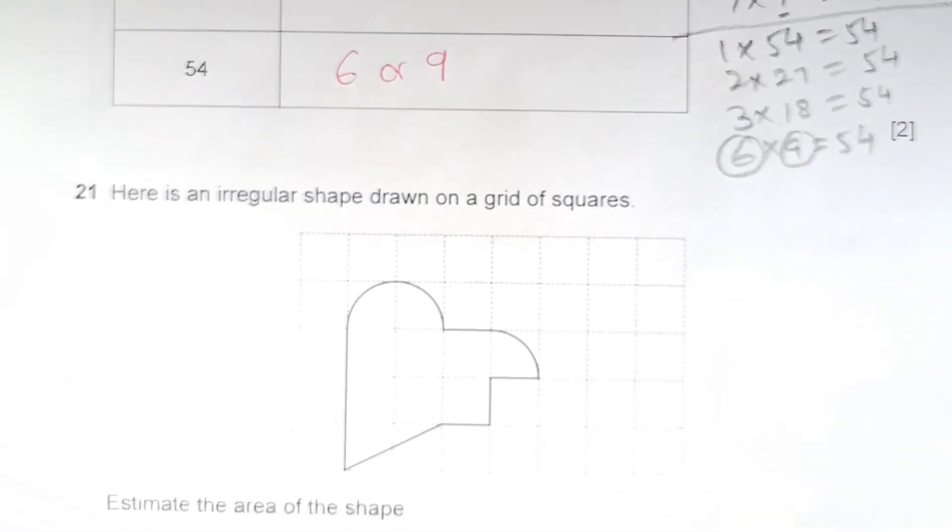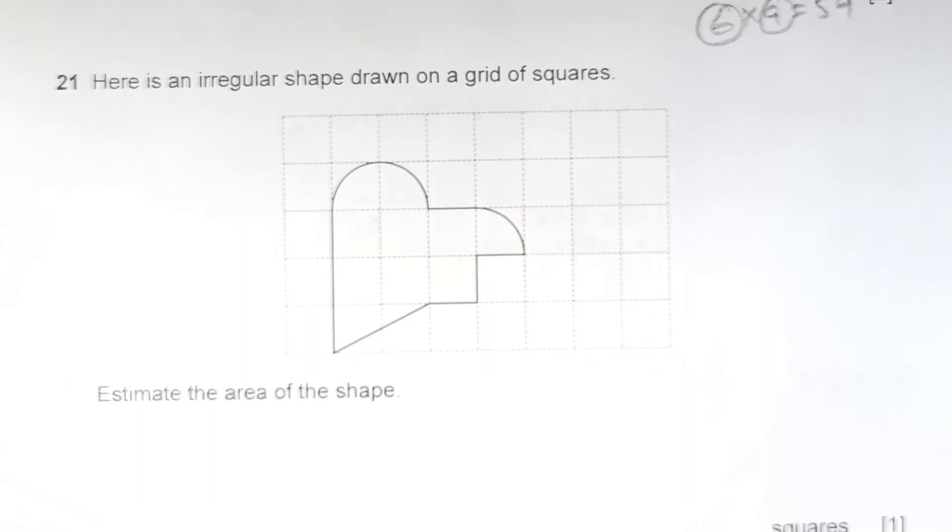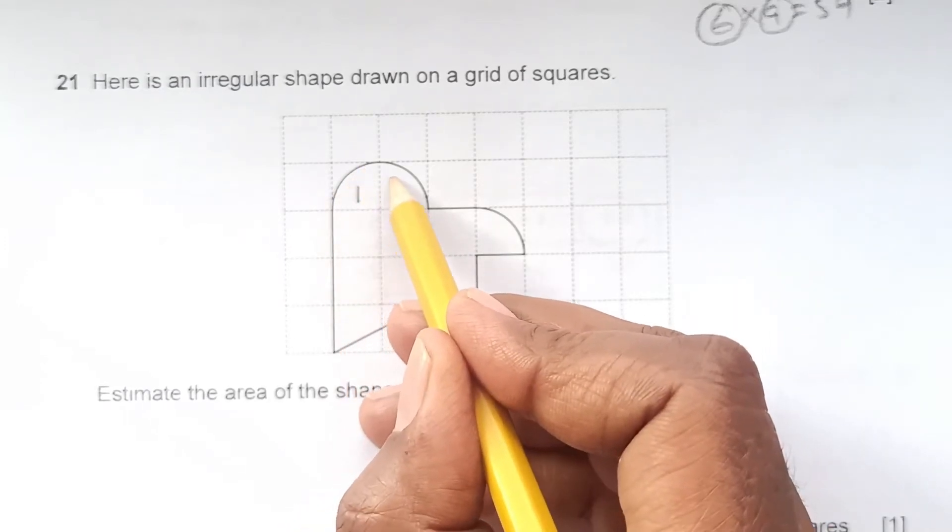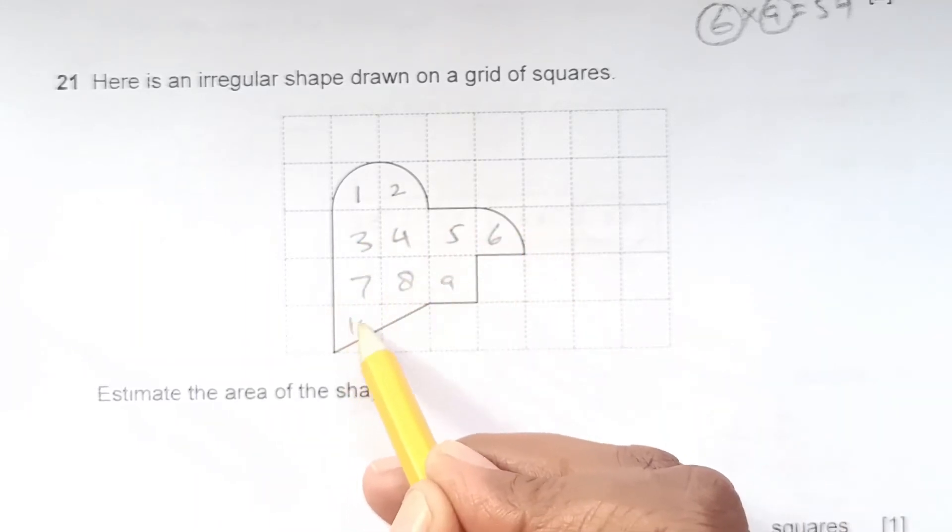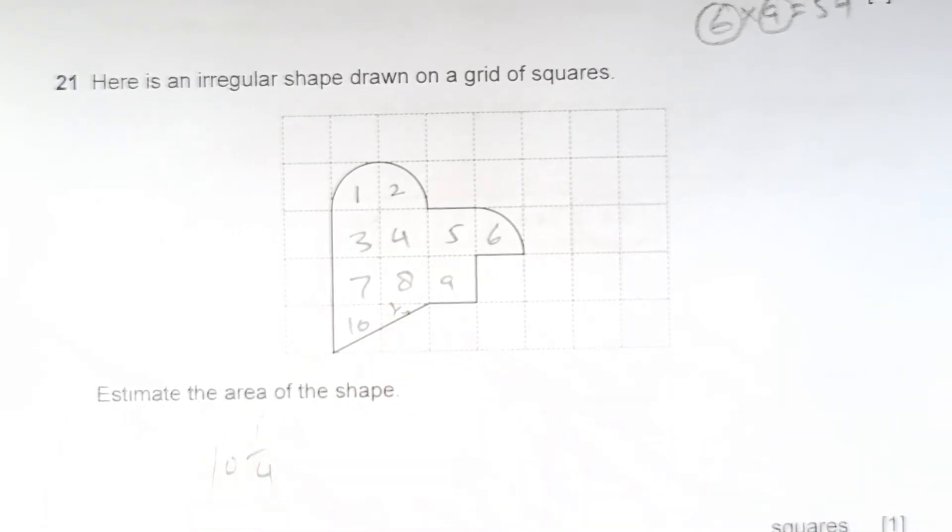Number 21. Here is an irregular shape drawn on a grid of squares. Estimate the area. We are counting the number of squares which are full and more than half. This is more than half, we will count it: 1, 2, 3, 4, 5, 6, 7, 8, 9, and 10. We have 10 full and about a quarter. Estimate the area, so you may have 10 and 1/4 squares.